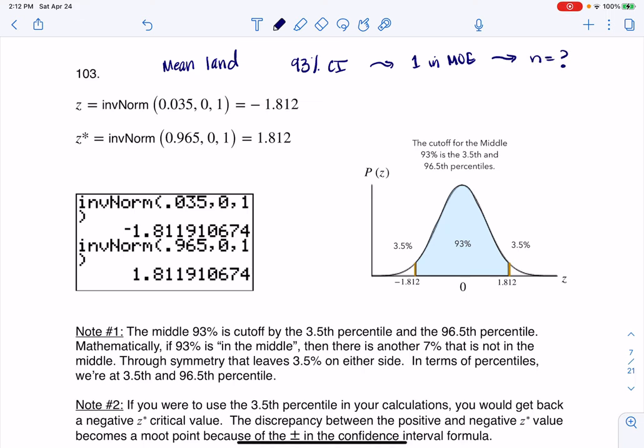We have a margin of error formula, but what we don't have is a 93% confidence interval critical value. Whenever you want to make that confidence interval, we would do x bar plus or minus a t star times s over square root n, and we would want that critical value.